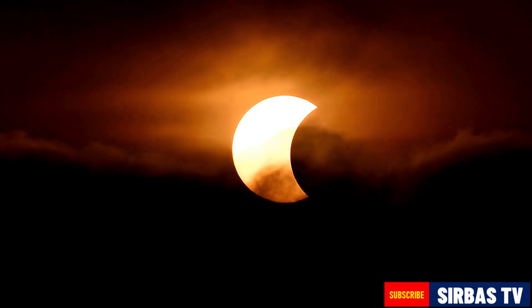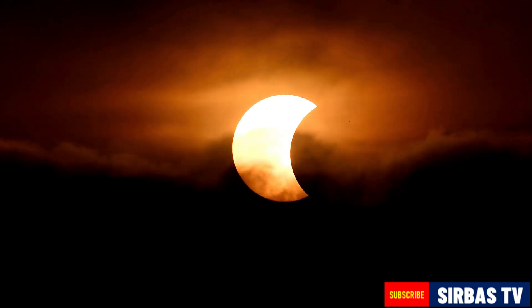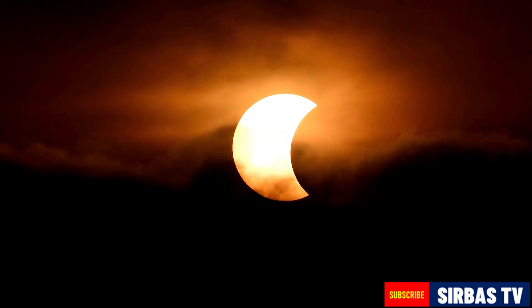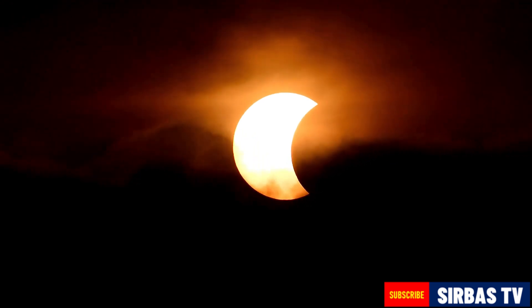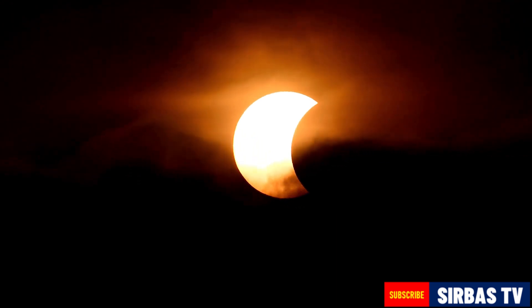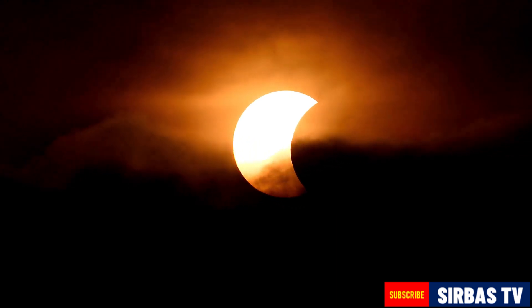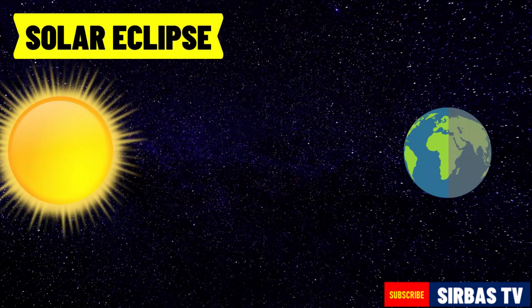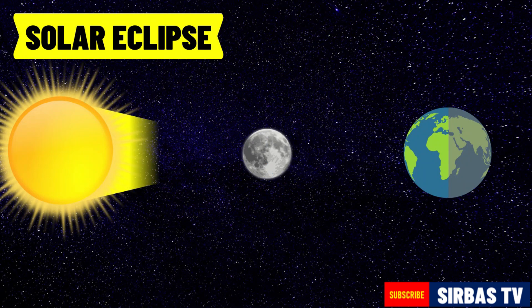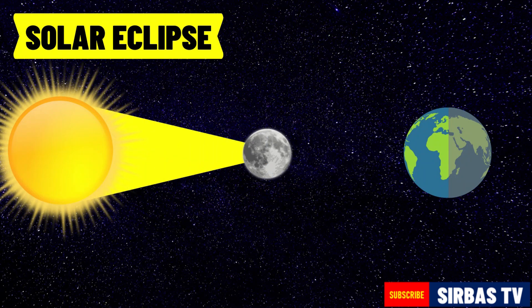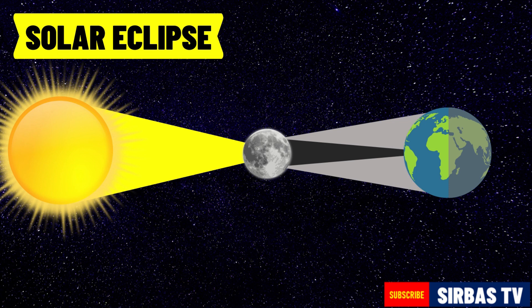You already know that solar eclipse occurs during the new moon and it happens during the day. The moon is located in between the sun and earth, and the moon blocks the light of the sun to the earth.